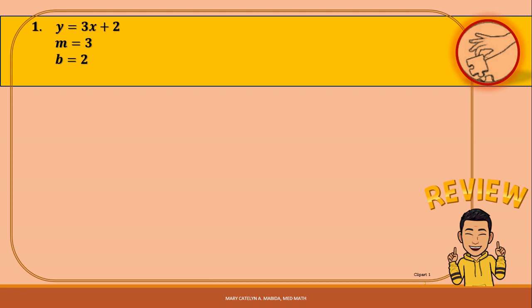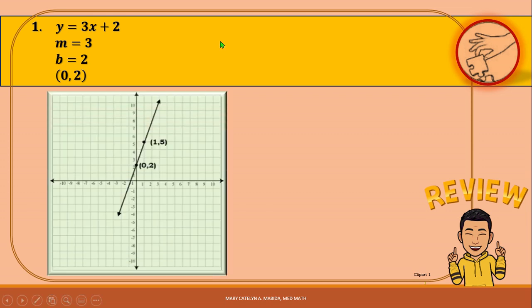We can also express the y-intercept as the ordered pair (0, 2). We start by plotting the point (0, 2), and using the slope, which is 3, we rise 3 units and run 1 unit to the right. Our second point is (1, 5). Connecting the two points, we have the graph of the equation y = 3x + 2.